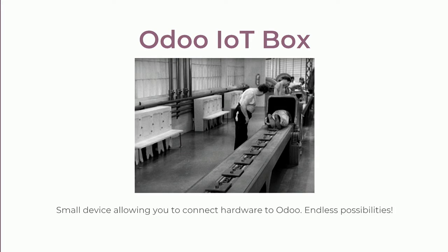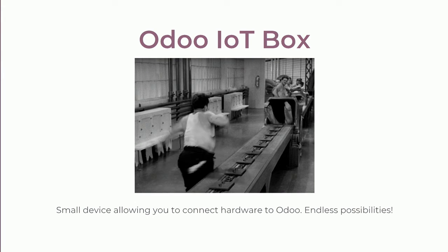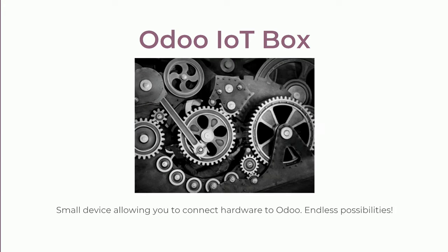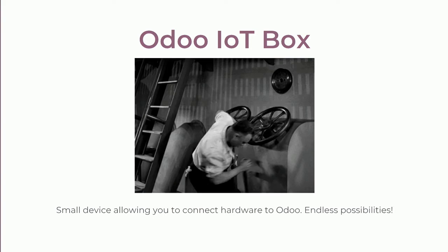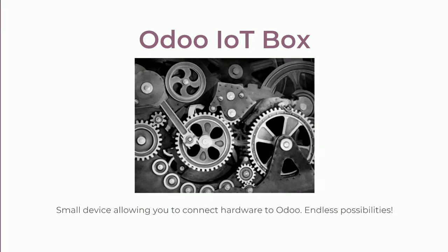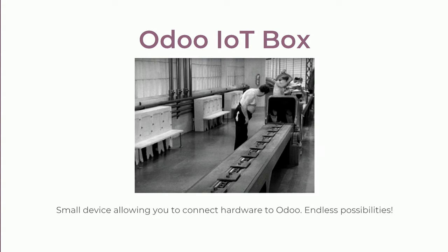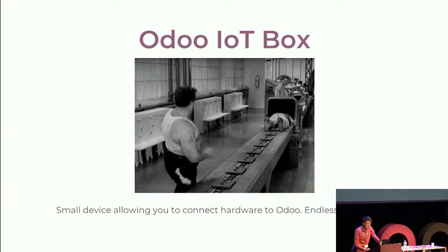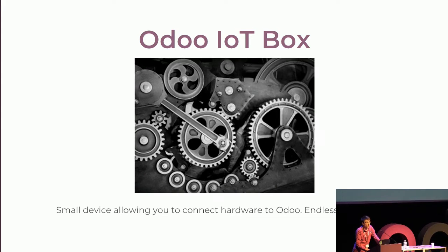The first main feature is the IoT box. You've seen the presentation from Laura just before — I'm not going to explain it in more detail — but basically it means you'll be able to connect any device from your manufacturing chain or inventory to the Odoo backend and collect any information you need, inputting it into your Odoo database.